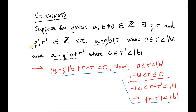To show uniqueness, we assume we have another pair q prime and r prime in the integers, such that a equals q prime b plus r prime, where r prime is non-negative and r prime is less than the magnitude of b. Looking at these two equations and subtracting them, we get q minus q prime times b plus r minus r prime equals 0.